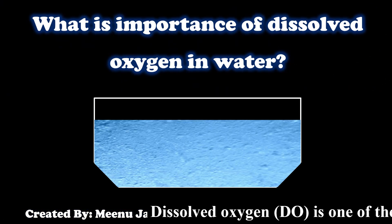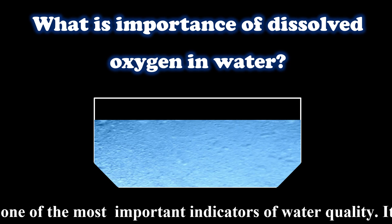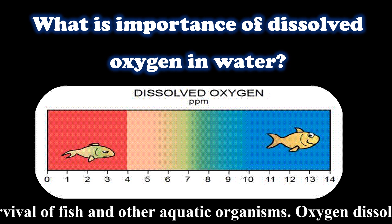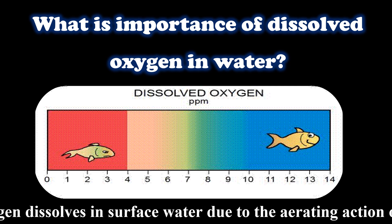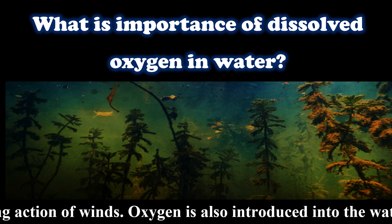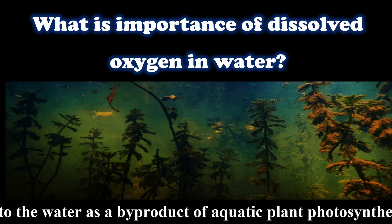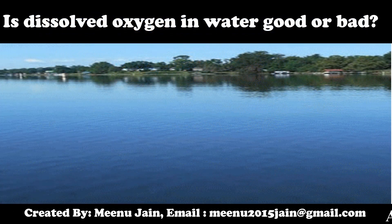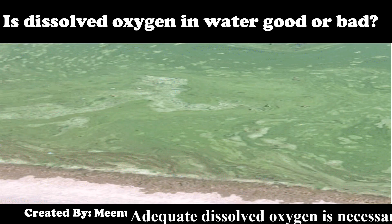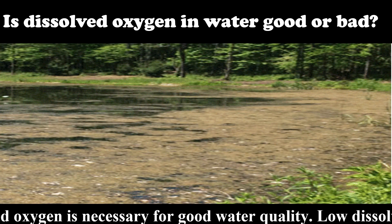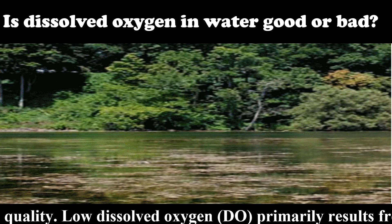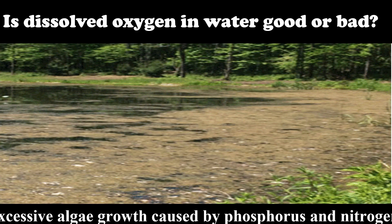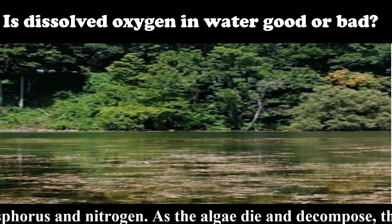Dissolved Oxygen is one of the most important indicators of water quality. It is essential for the survival of fish and other aquatic organisms. Oxygen dissolves in surface water due to the aerating action of winds, and is also introduced into the water as a byproduct of aquatic plant photosynthesis. Adequate Dissolved Oxygen is necessary for good water quality. Low Dissolved Oxygen primarily results from excessive algal growth caused by phosphorus and nitrogen. As the algae die and decompose, the process consumes dissolved oxygen.